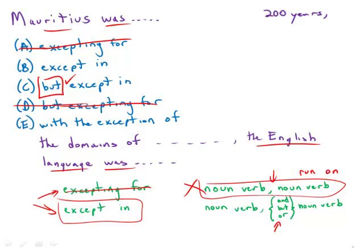Mauritius was a British colony for 200 years, except in the domains of administration and teaching. Well, wait a second. It was a colony except in certain domains of the island. That doesn't even make any sense. So B is wrong. E is wrong.